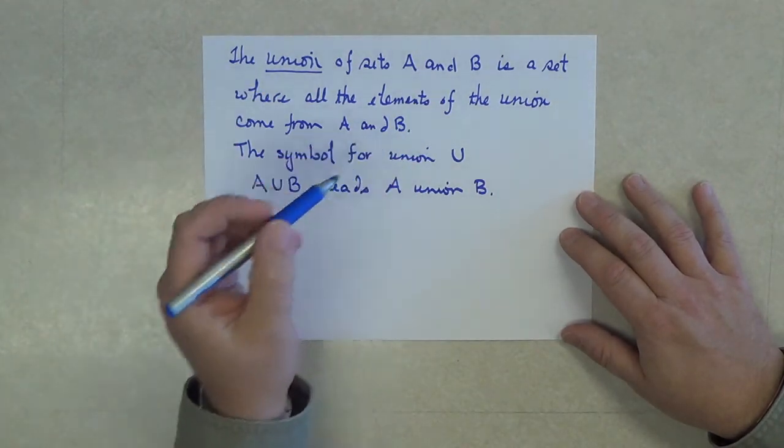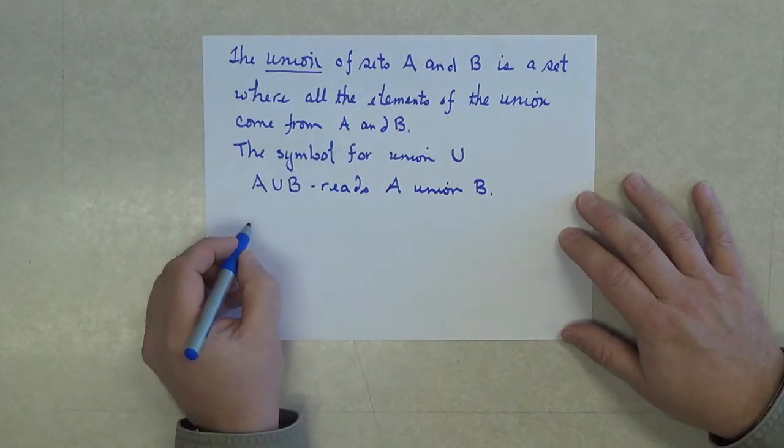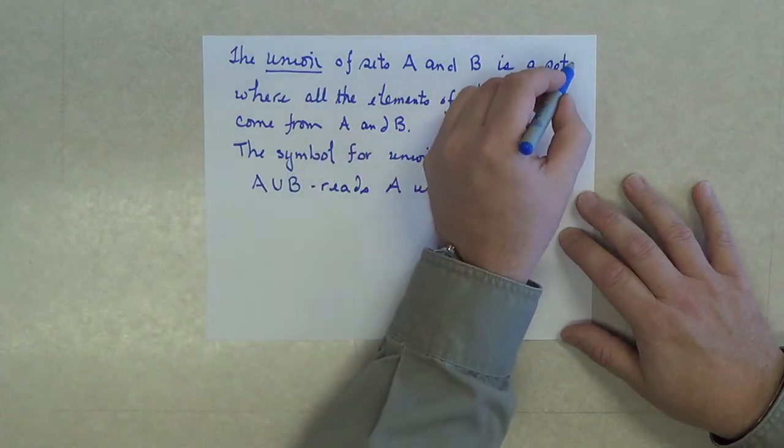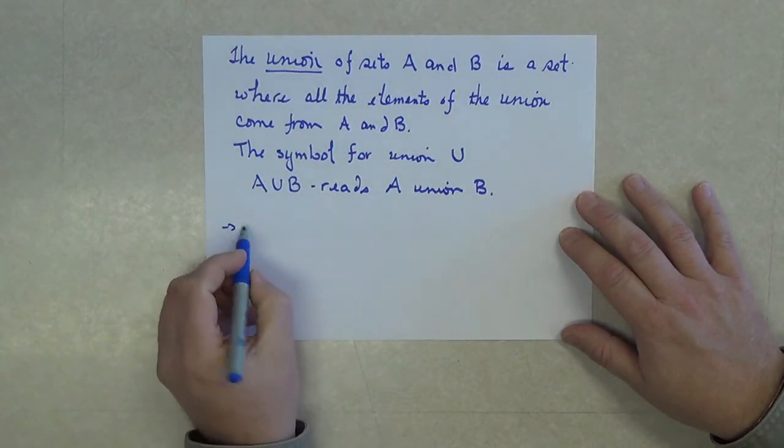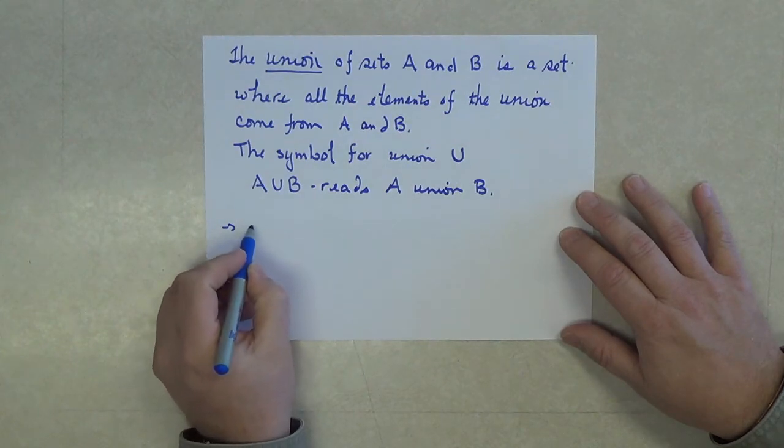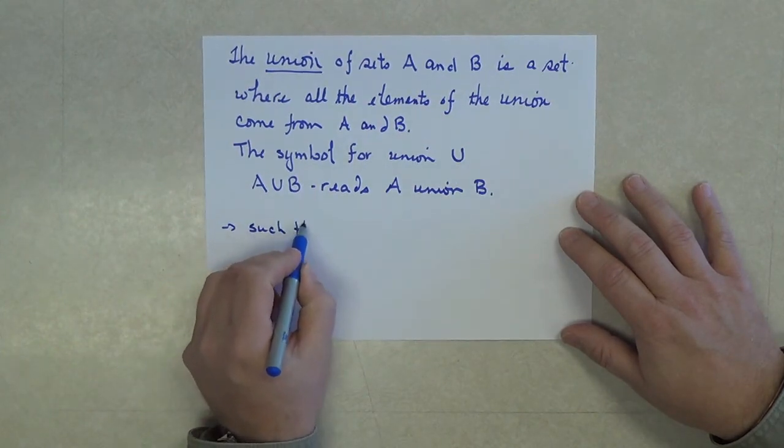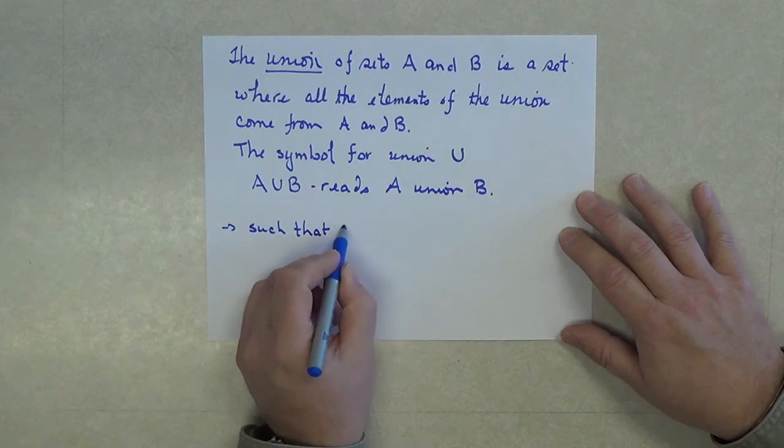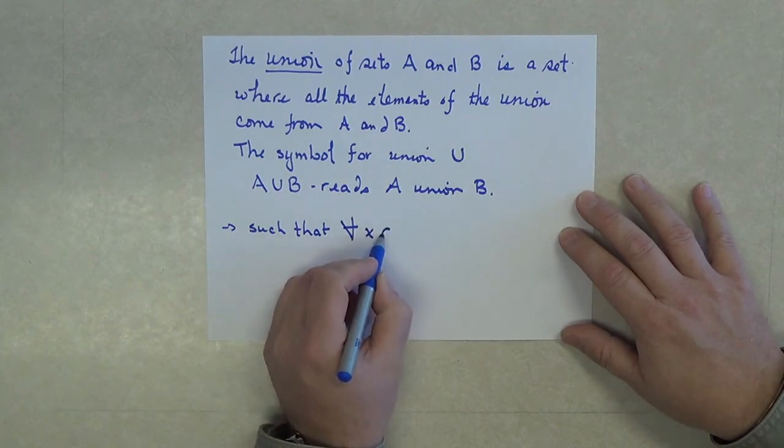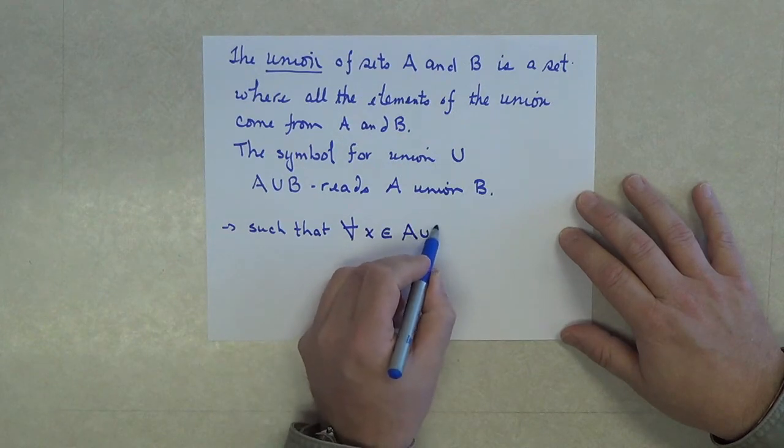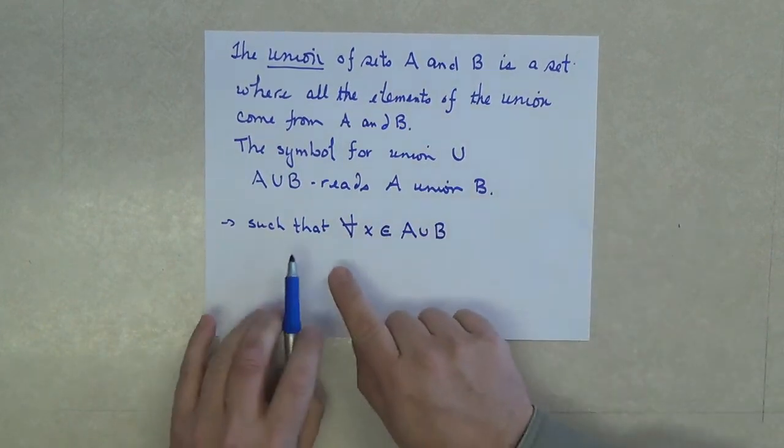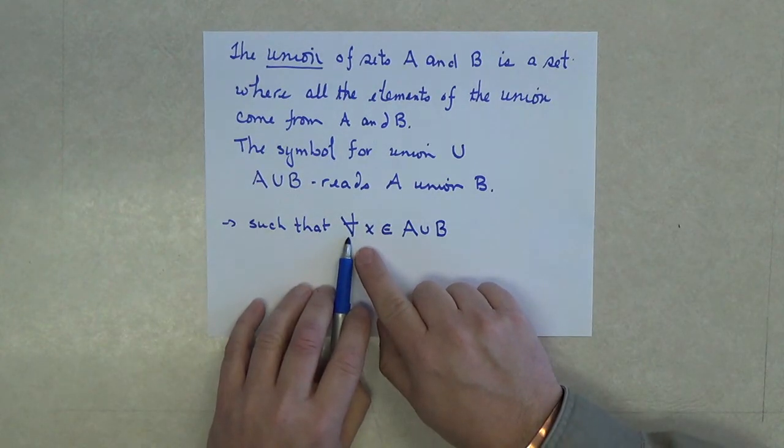The union of two sets is a set such that for every x, an element of the union. This is a math symbol saying, for all.